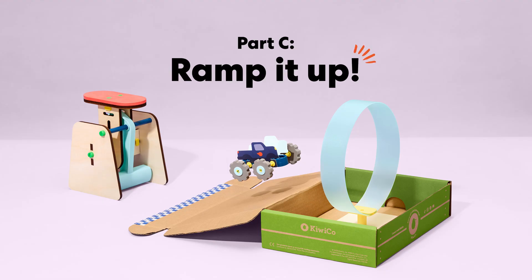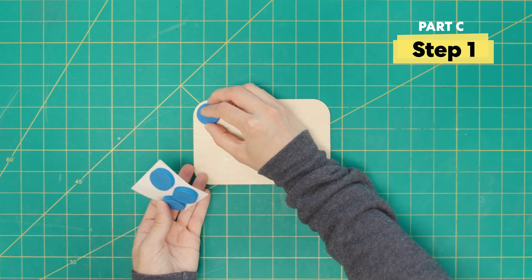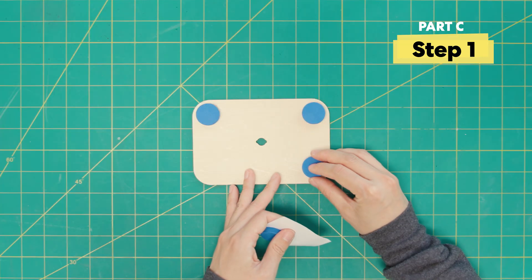And finally, part C. Let's make a ramp for the stunt cars. Grab the base, peel off the film of the four blue foam pieces, and attach these foam pieces to each corner.